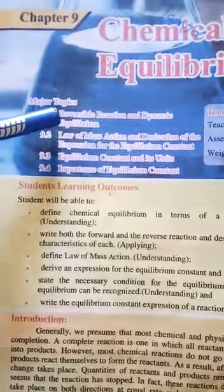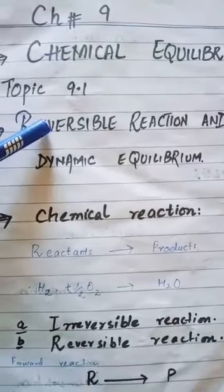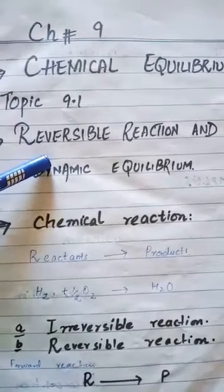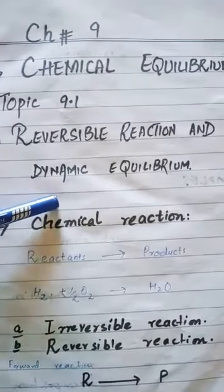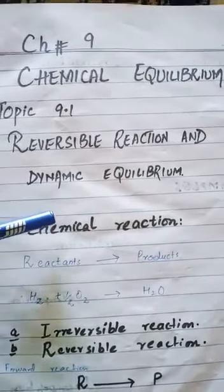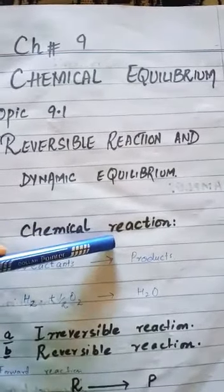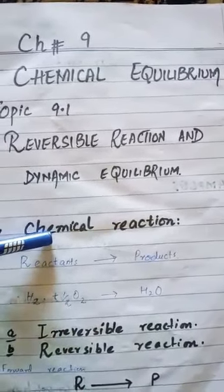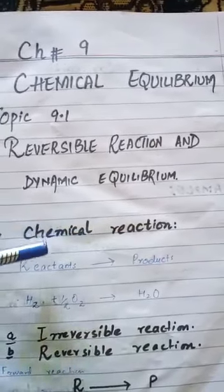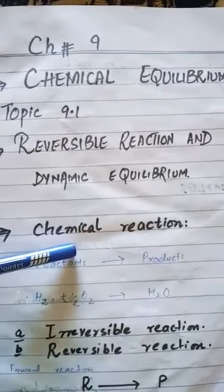In today's lecture we will study topic 9.1: Reversible Reaction and Dynamic Equilibrium. Before discussing this topic, let's recall the basic concept of a reaction. What is a chemical reaction? A reaction is a process in which reactants get converted into products. Reactants are those substances which react with each other in a reaction.